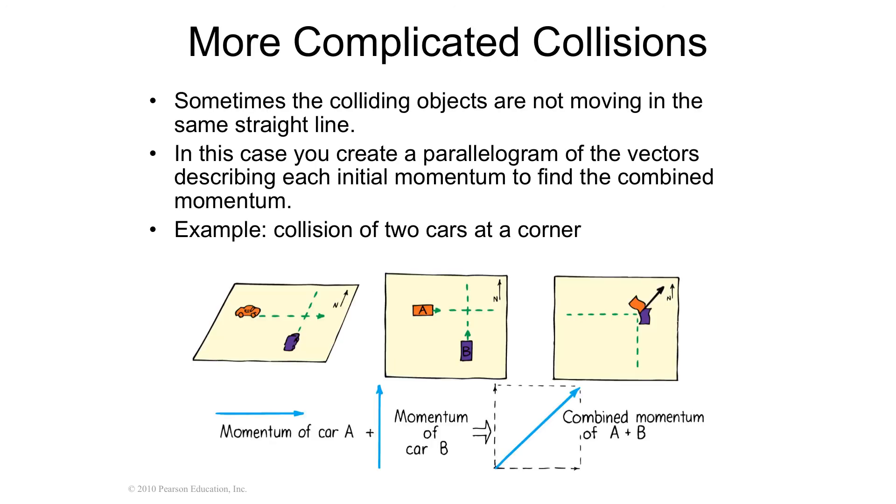Now, life doesn't always work on train tracks. So if you were to have a car crash at different angles, then you're going to have to do vectors again. You're going to have to say the resultant of these two cars that are crashing is going to be the combined of the, say, the Y direction, that would be the purple car, and the X direction, which would be the orange car, and when it crashes together, the momentum is going to be together, and the resultant momentum would be at some kind of an angle.